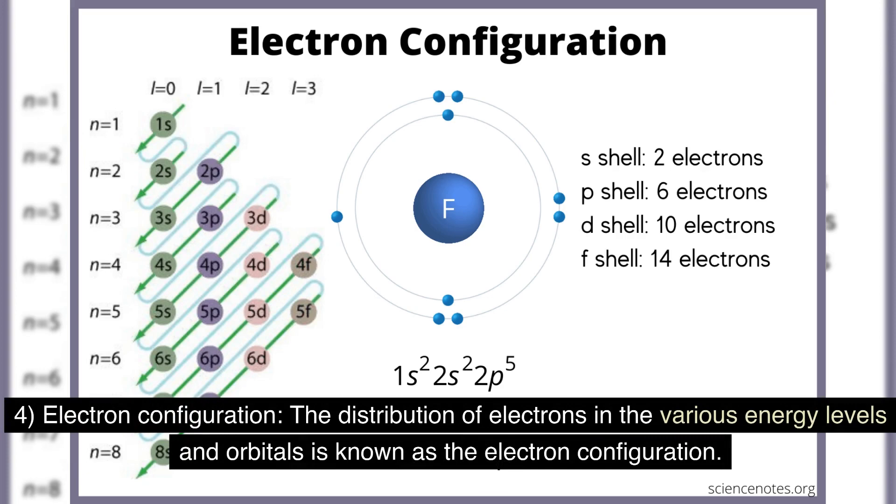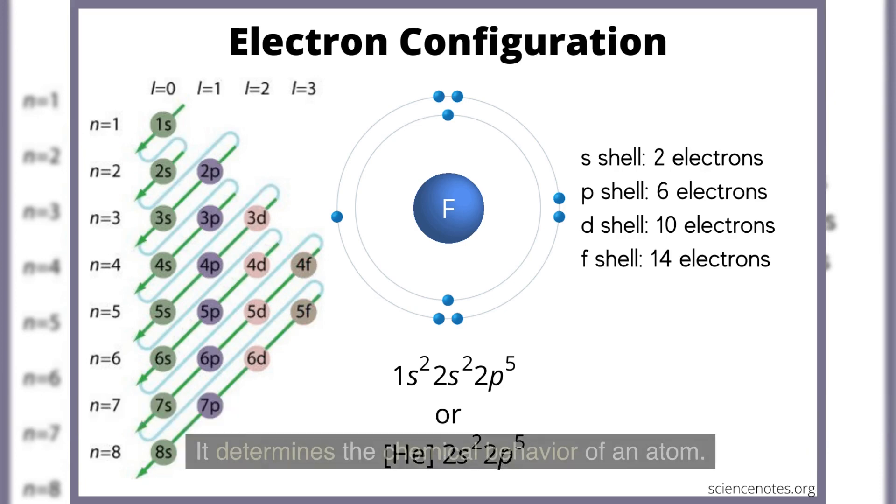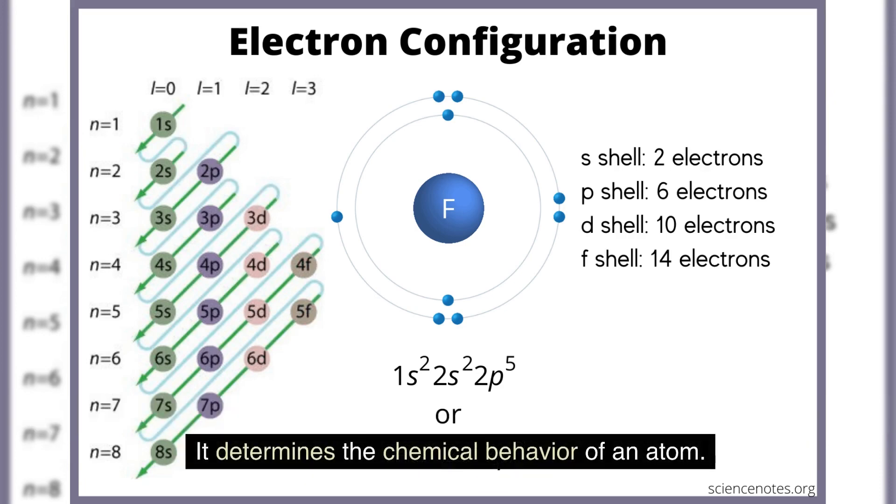Electron configuration: the distribution of electrons in the various energy levels and orbitals is known as the electron configuration. It determines the chemical behavior of an atom.